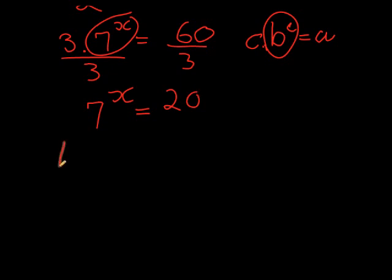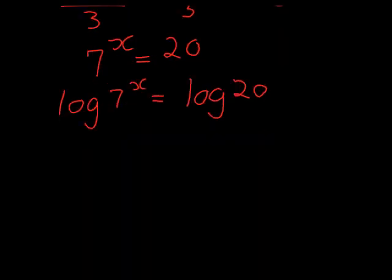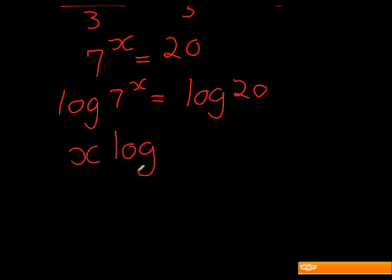Once I get there, now we place both of those values inside a log base 10. In other words, we make it the input of such a function, and at that point we can put the x in front: x log 7 equals log 20.